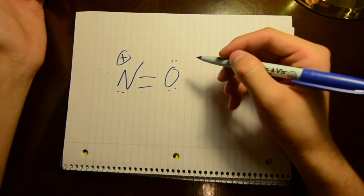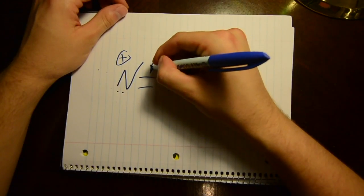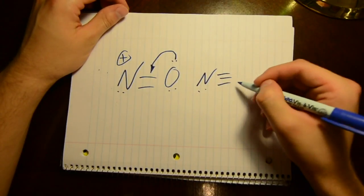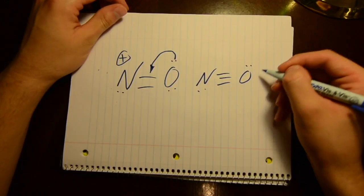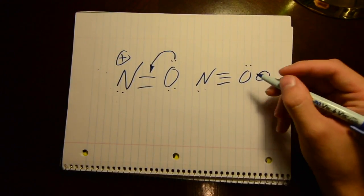So what are we going to do here? What we're going to do is move this electron from the oxygen to make an extra bond with nitrogen. What we would get is a triple bond between nitrogen and oxygen with one lone pair on oxygen, but you'll have a positive sign on the oxygen.